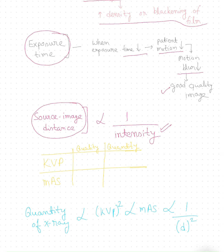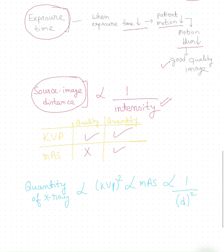From this video we learned that milliampere does not affect quality, while KVP affects both quality and quantity. The quantity of X-ray produced is directly proportional to the square of KVP, directly proportional to the milliampere second, and inversely proportional to the square of distance.